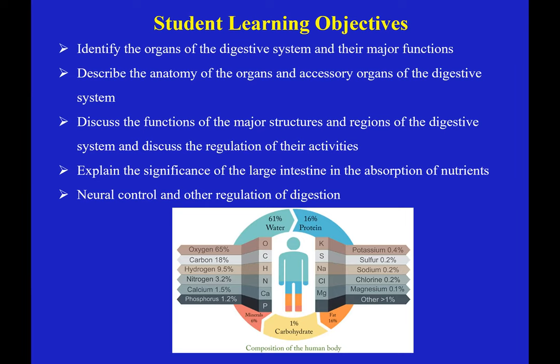We'll see how nutrient absorption and water absorption happens in your intestine. We'll also touch upon the neural control, the hormonal control, and the enteric nervous system of the digestive tract. This picture in the bottom shows that in order for us to survive, you need the four macromolecules: proteins, lipids, carbohydrates, nucleic acids, water, vitamins and minerals.